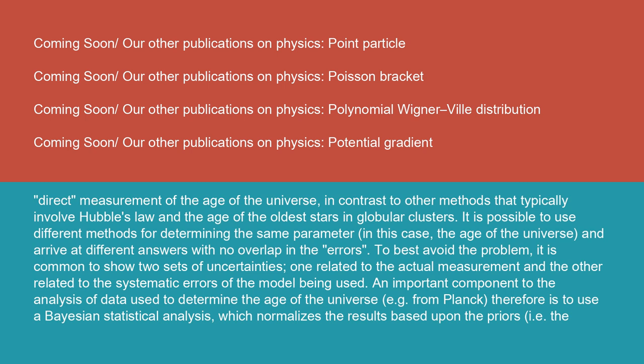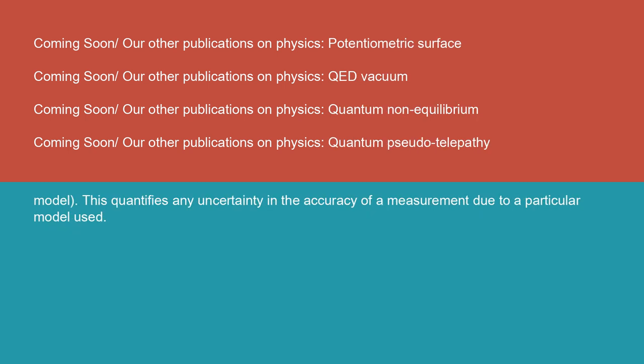An important component to the analysis of data used to determine the age of the universe, e.g. from Planck, therefore is to use a Bayesian statistical analysis, which normalizes the results based upon the priors, i.e. the model. This quantifies any uncertainty in the accuracy of a measurement due to a particular model used.